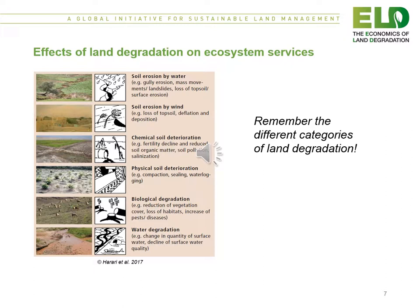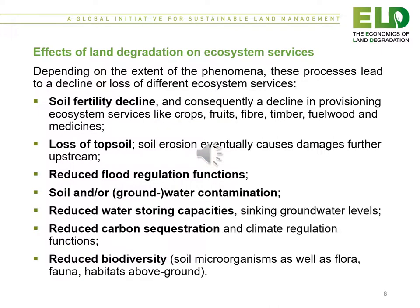We will now link the land degradation processes to ecosystem services. For this, we need to remember the different categories of land degradation as shown in the figure on this slide. Briefly, the effects of land degradation on ecosystem services are outlined in this slide. Depending on the extent of the phenomena, these processes lead to a decline or a loss of the different ecosystem services.